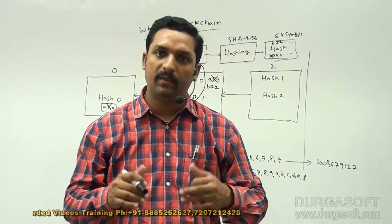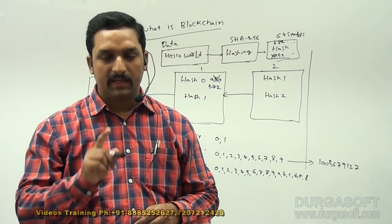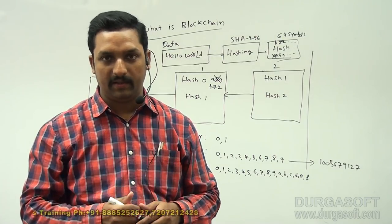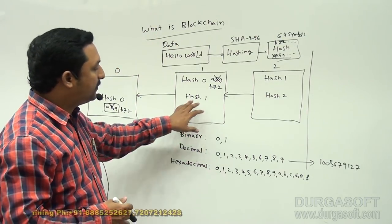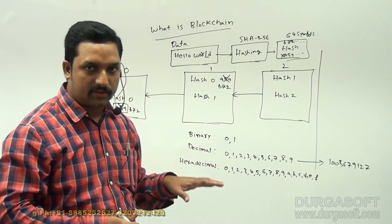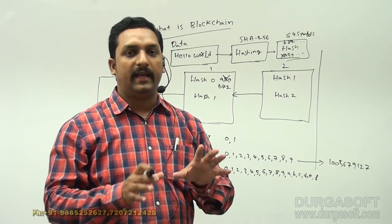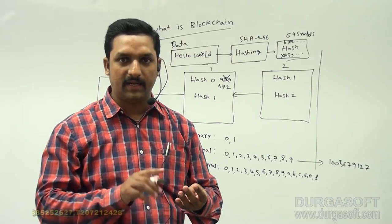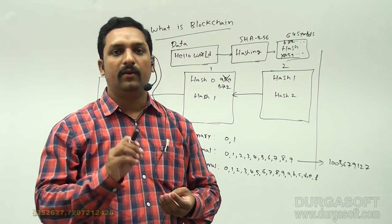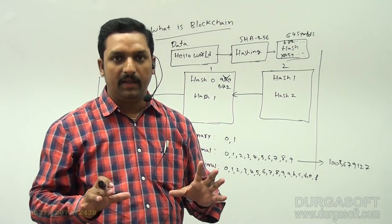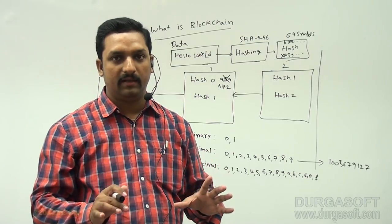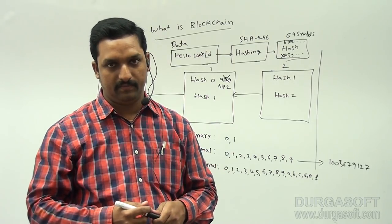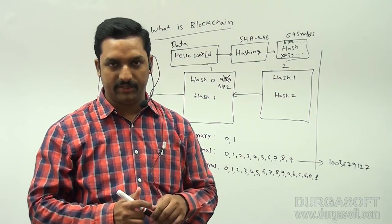We can store unlimited data in a secure and private format because we store hash format, not plain text. So it is 100% secured and at the same time 100% read-only. Nobody can tamper with the data — it is safe on the network even though it is available to everyone. This is the feature of hash and blockchain.